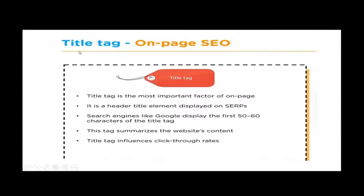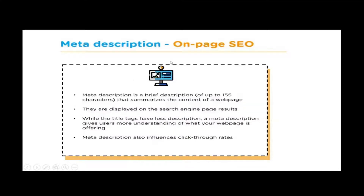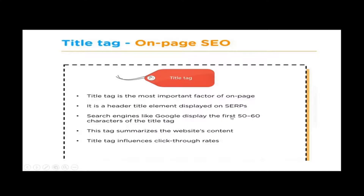Now let's look at the title tag. Google displays the first 50 to 60 characters of the title tag. The title tag summarizes the website content. For example, when you type 'how to become a digital marketing specialist,' what you see displayed is the title tag. 'How to become a digital marketing specialist' is a good keyword — using 'how' makes it a well-structured keyword research example.